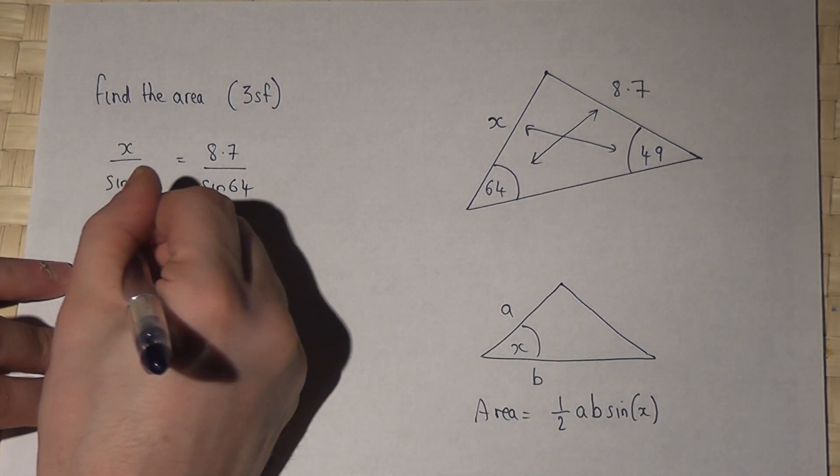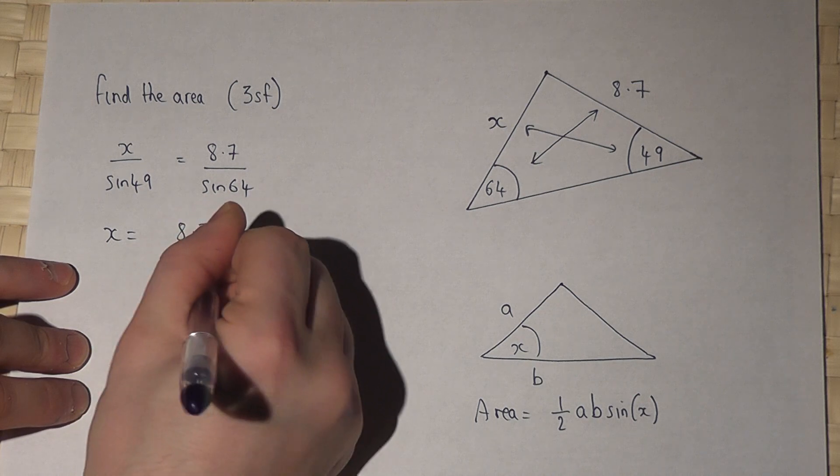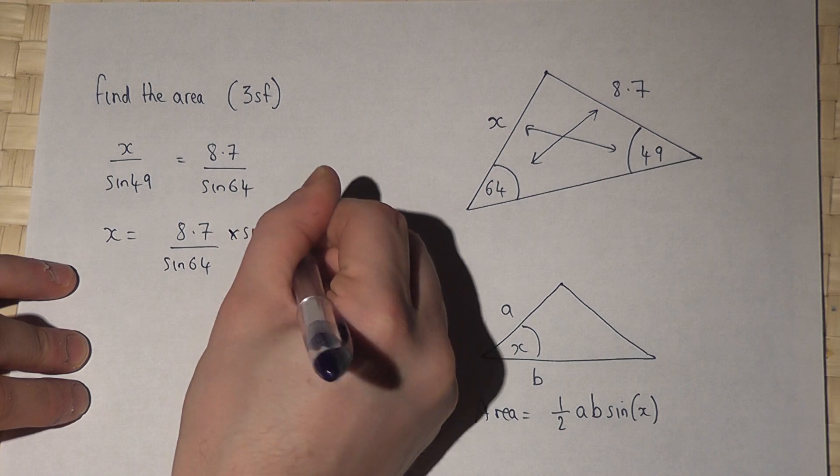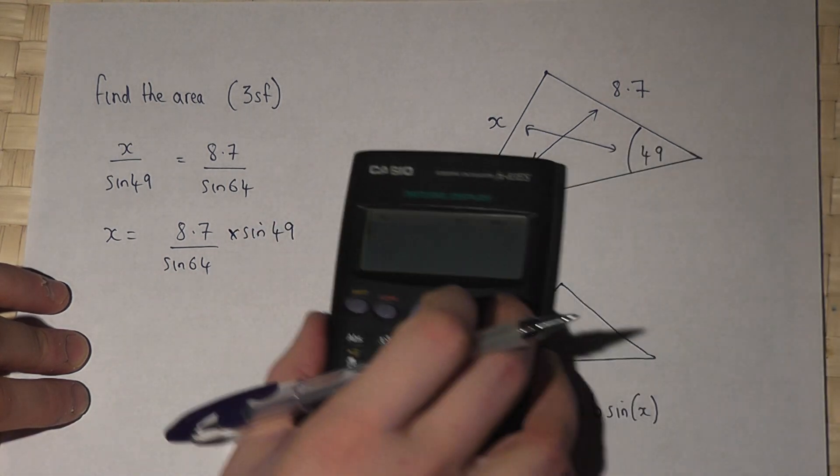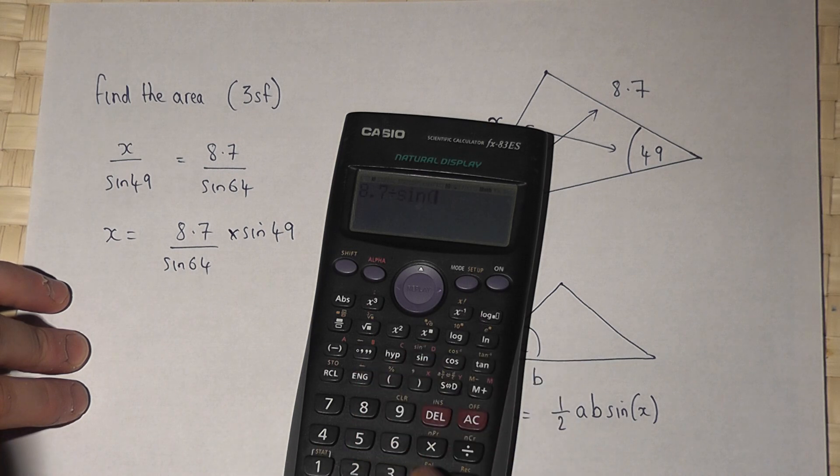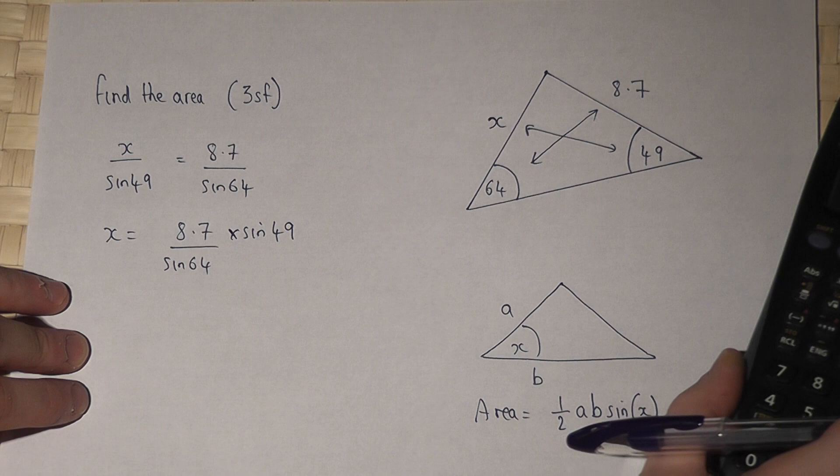So X will equal 8.7 over sine of 64 times by sine of 49. So 8.7 divided by sine of 64 times by sine of 49 gives me the side 7.305.